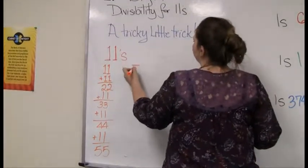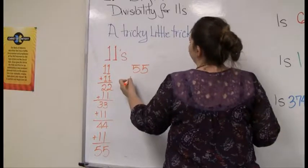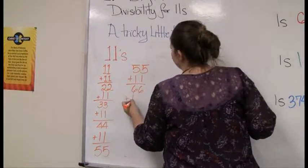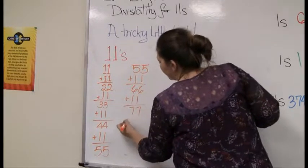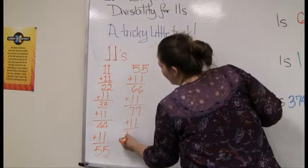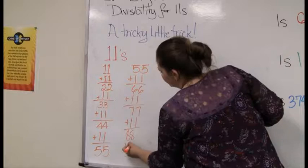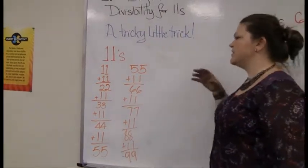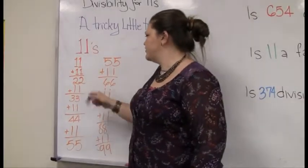I'm going to use up some board space here because I really want to show you this. Adding another 11, yes, I do get 66, 77, 88, and 99. And up until now, we're thinking this is real nice. Just look at these double digits.